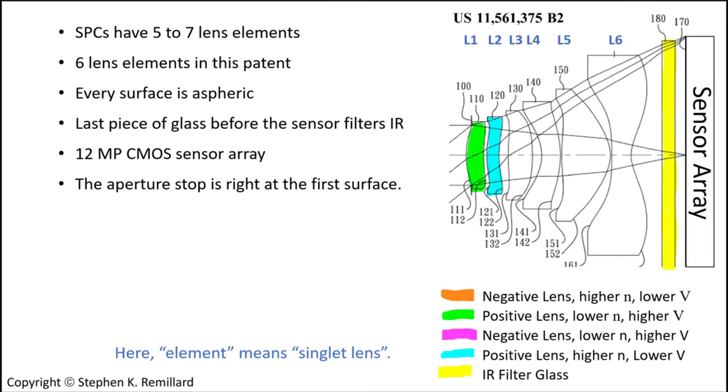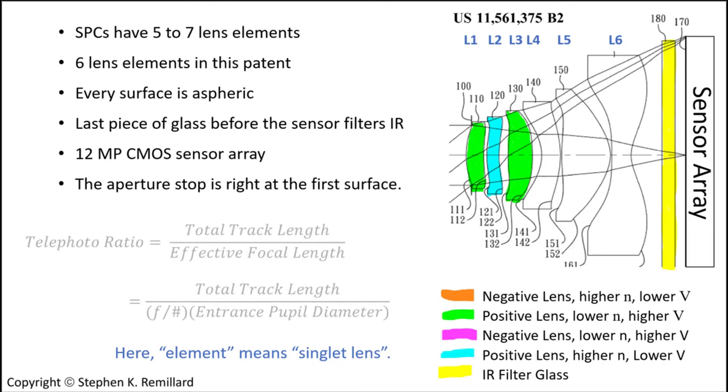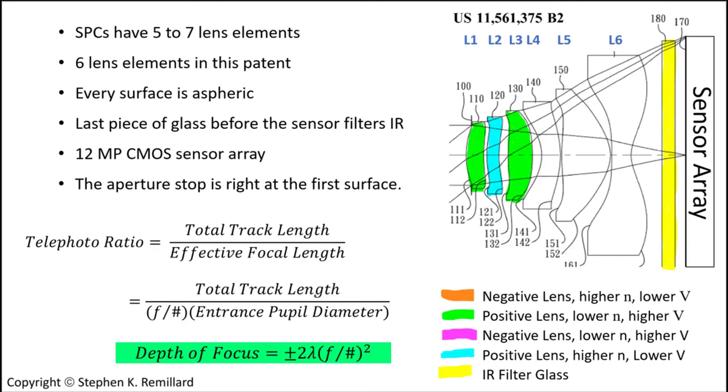The second positive element is made with higher index plastic. The positive third element is made from lower index plastic. Adding some positive refracting power at the front of the lens enables a smaller telephoto ratio, which can translate into a larger F number as well as larger depth of focus. The negative fourth element is made from higher index plastic. The positive fifth element from lower index plastic. And finally, the negative sixth element is made from lower index plastic.